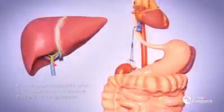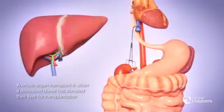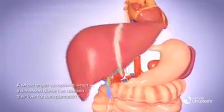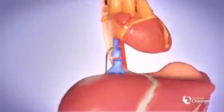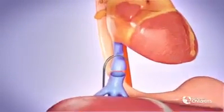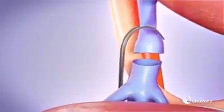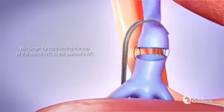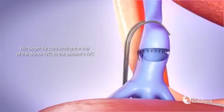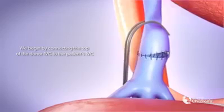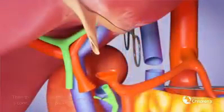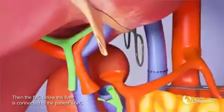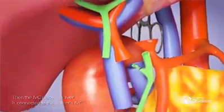A whole organ transplant is when the entire liver from a deceased donor is used for transplantation. We begin by connecting the top of the donor IVC to the patient's IVC. Then the IVC below the liver is connected to the patient's IVC.